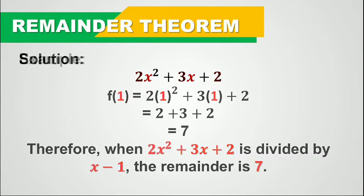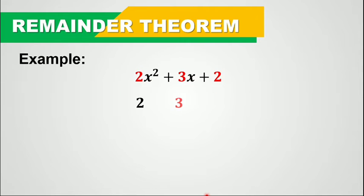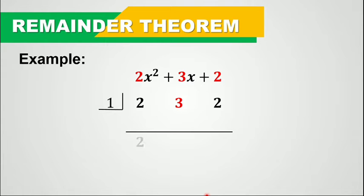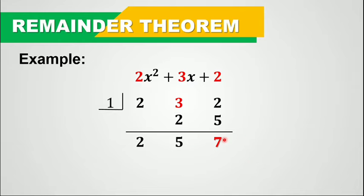So let's use synthetic division to prove that the remainder is 7. Let's bring down 2. So 2 times 1, that is 2. So 3 plus 2, that is 5. So 5 times 1, that is 5. So 5 plus 2, that is 7. Therefore, the remainder is 7, as we've confirmed using synthetic division.